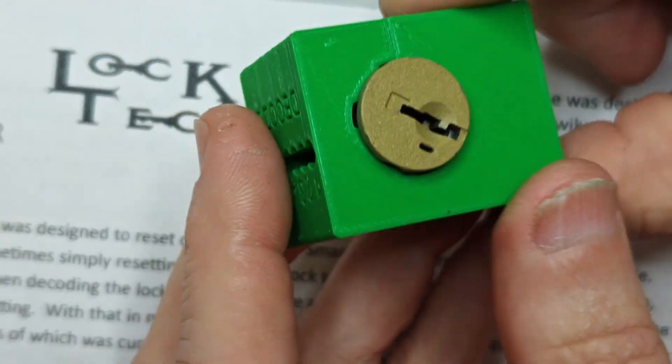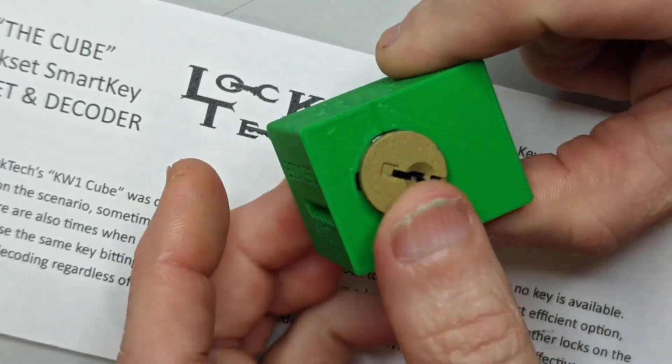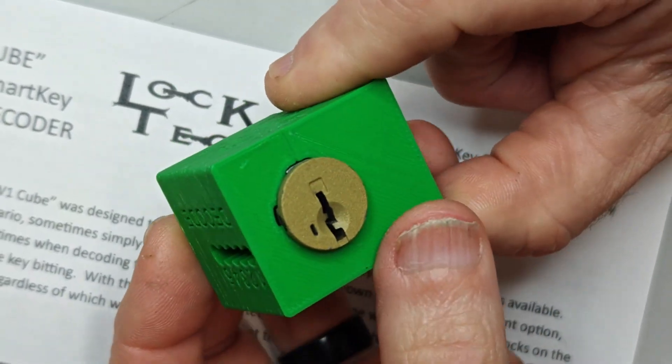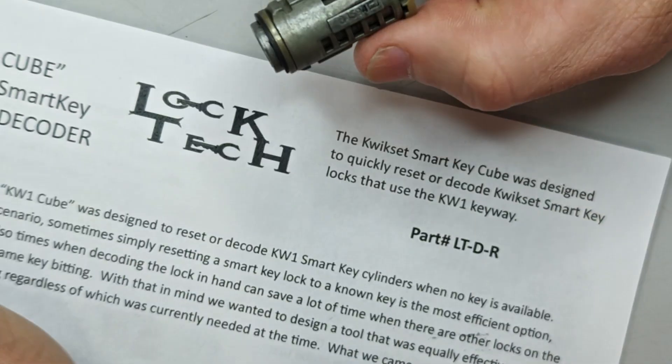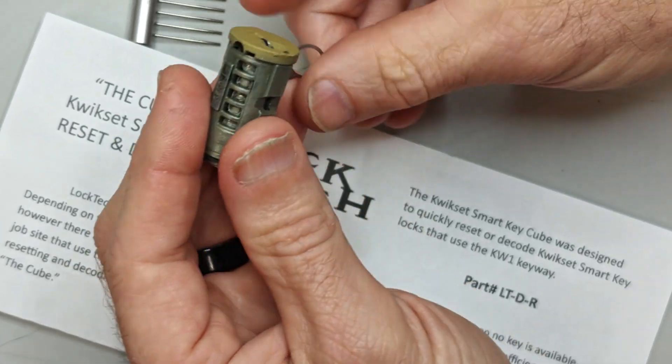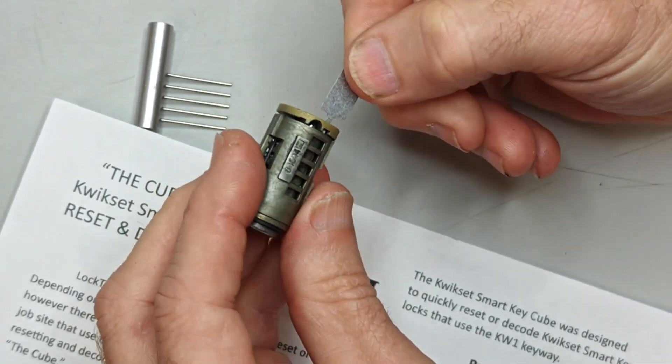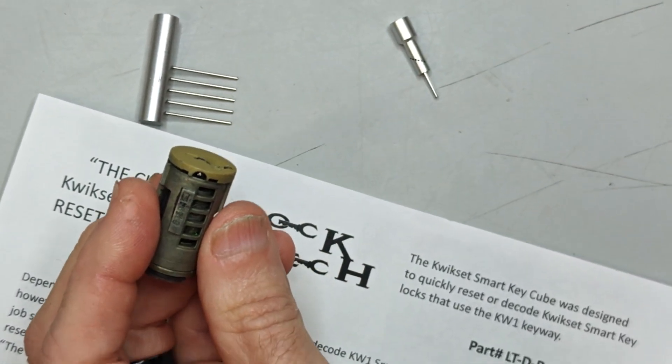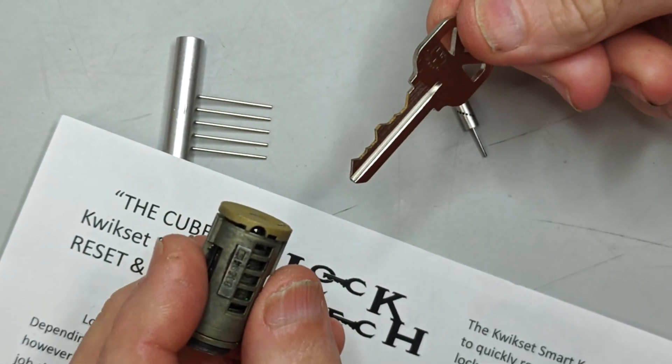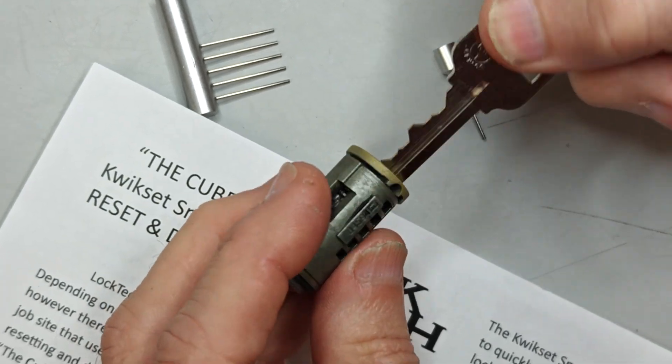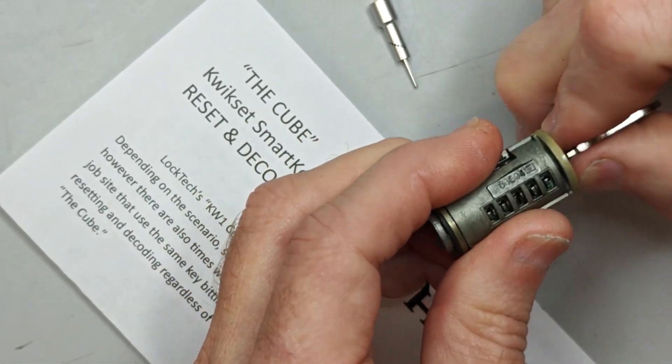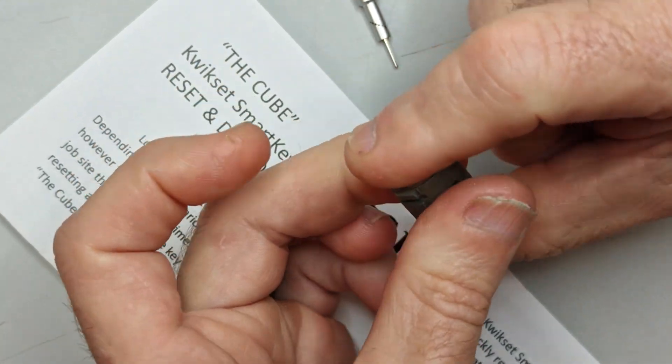Okay, so once it's rotated you have your 90 degree indicator over here that you're supposed to turn it to before you reset it. All right, so now this cylinder is ready to be reset. Put that in there and we can grab our new key that we want to key it up to. Enter it in there and rotate it back. And now this cylinder has been decoded, reset, and it's ready to go.